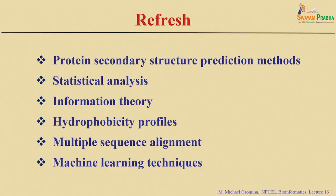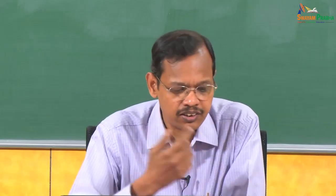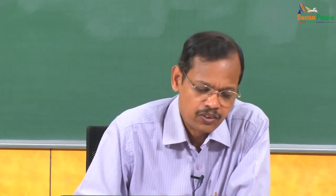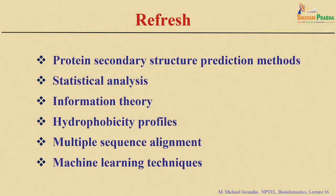We discussed about statistical analysis — for example, the Chou-Fasman method, which is based on the propensity of amino acid residues at any conformation, either helix, strand, or coil. Then we discussed about information theory, called the GOR method.